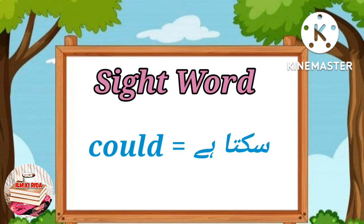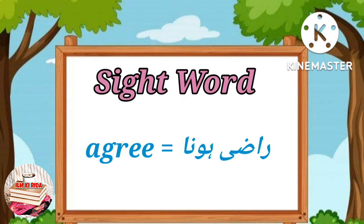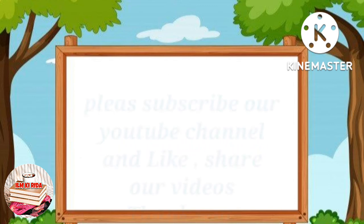These - Meaning: इन्हे. Could - Meaning: सकता है. Agree - Meaning: राजी होना.